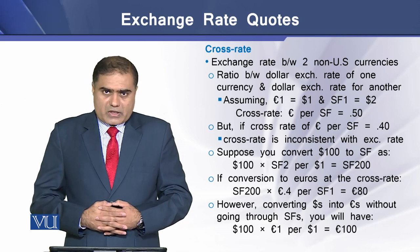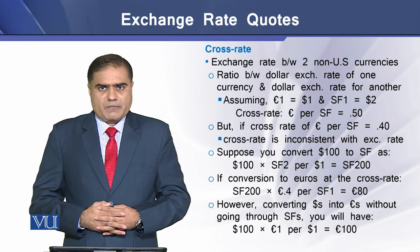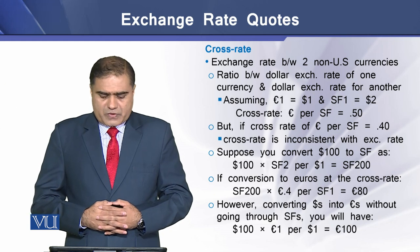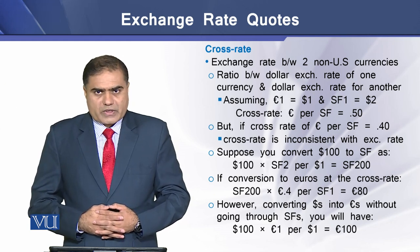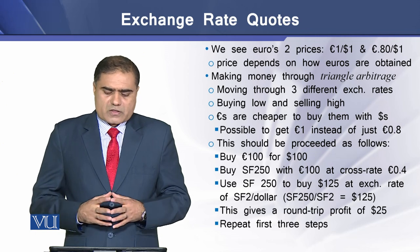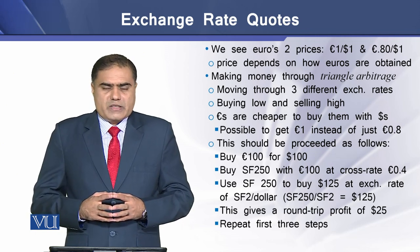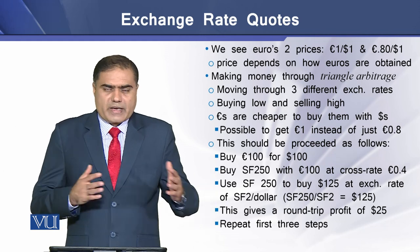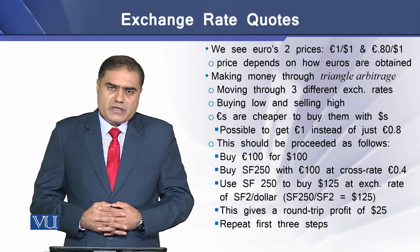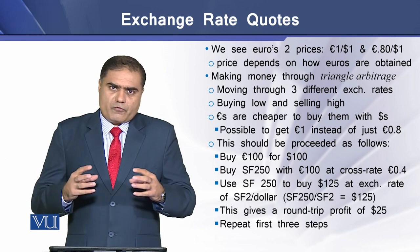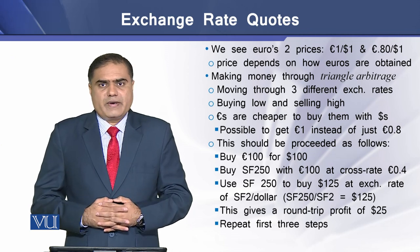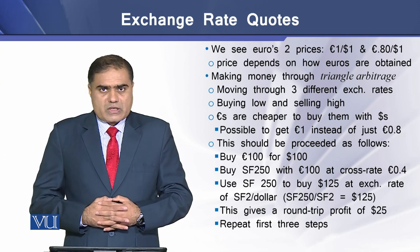However, converting dollars into euros directly — without going through Swiss francs — at the exchange rate of one euro per one dollar gives you 100 euros. This means we have two prices for euros: one is 100 euros per 100 dollars using the direct exchange rate, and the other is 80 euros per 100 dollars using the Swiss franc route. This price difference depends on how we obtain euros in the market.